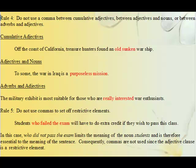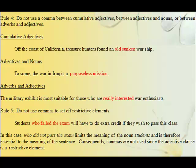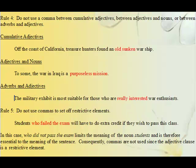Rule 4. Do not use a comma between cumulative adjectives, between adjectives and nouns, or between adverbs and adjectives. Cumulative adjectives example: off the coast of California, treasure hunters found an old sunken warship — notice there's no comma after 'old.' Adjectives and nouns: the war in Iraq is a purposeless mission — no comma after 'purposeless.' Adverbs and adjectives: the military exhibit is the most suitable for those who are really interested war enthusiasts — no comma after 'really.'